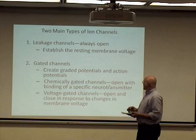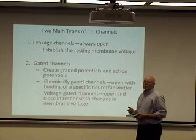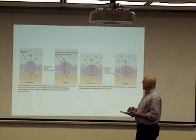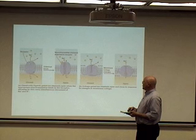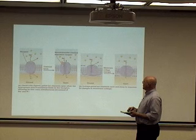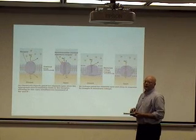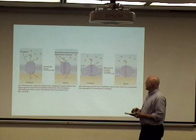We also have chemically-gated channels, and these are channels that we're about to talk about. Chemically-gated channels open and close in response to a specific neurotransmitter. If we take a look at their illustrations, here is a chemically-gated channel — it's closed. The chemically-gated channel is linked to a receptor area. Here is a neurotransmitter. The neurotransmitter binds to the neurotransmitter receptor, and that opens a gate that allows the movement of sodium and potassium. These are the channels that open and are activated in response to a neurotransmitter that create the EPSPs and the IPSPs that will eventually lead to an action potential.